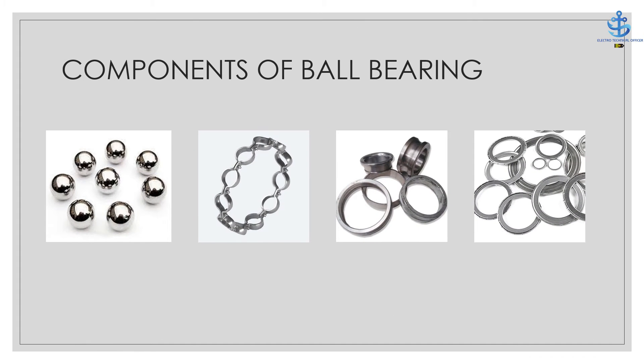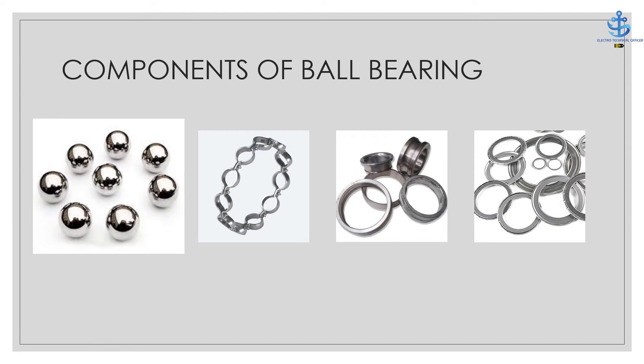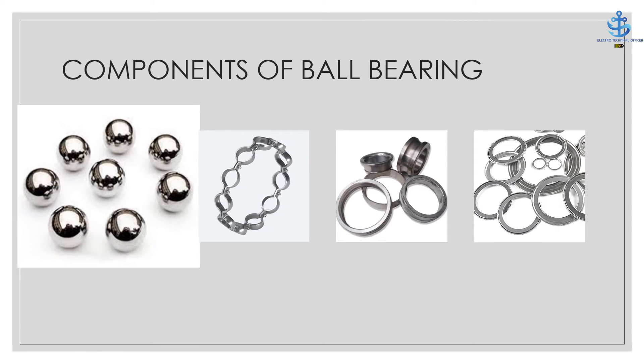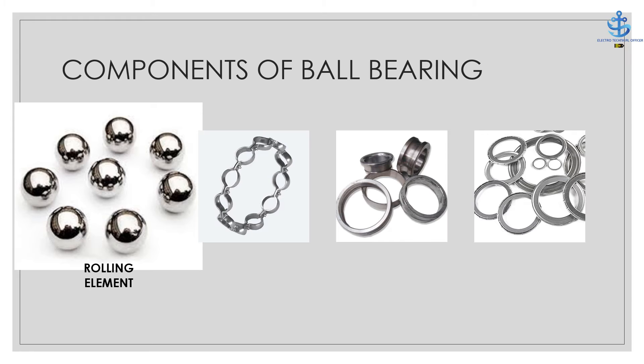Let us start with the basic components of ball bearing. Rolling element — these are the elements that carry the load, distributing it throughout the raceways. They tend to rotate about the inner race, but not at the speed the inner race rotates. It is something like the relation between the earth and the moon.